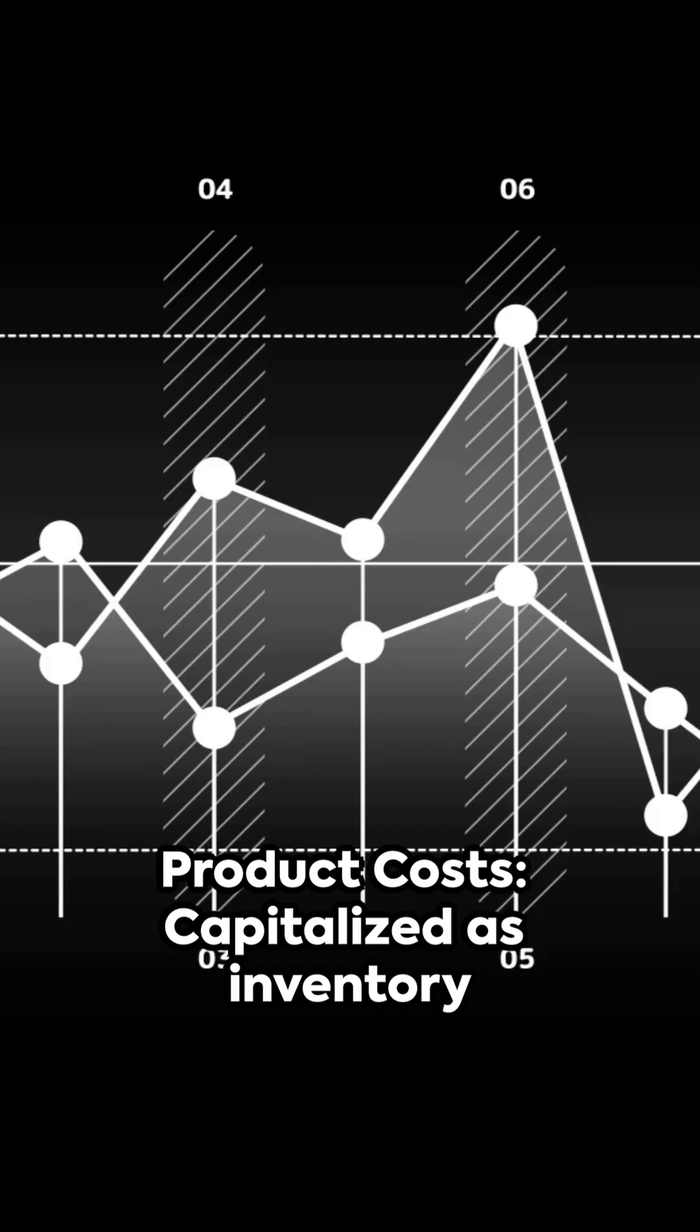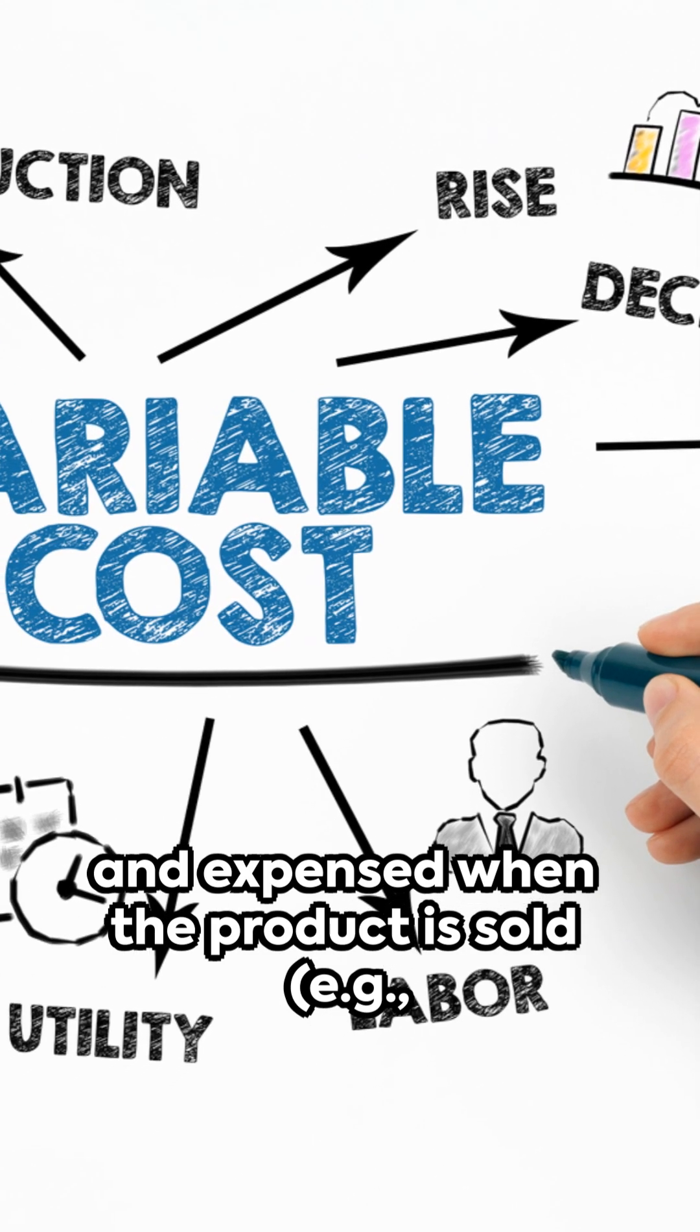Product costs are capitalized as inventory and expensed when the product is sold, for example, manufacturing costs.